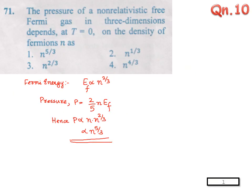Question number 10. The pressure of a non-relativistic free Fermi gas in three dimensions depends at t equal to 0 on density of fermions as: we should learn the relation for Fermi energy. We should also learn the relation of pressure with respect to Fermi energy. We know Fermi energy is proportional to n^(2/3). Hence the pressure will be equal to 2 by 5 n E_F. So pressure will be proportional to n^(5/3).